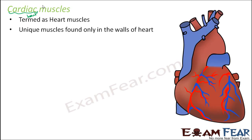The third type of muscle is cardiac muscle. The word cardiac itself means something related to the heart, so these are also termed as heart muscles. They are unique muscles found only in the walls of the heart. Initially people thought there were only two types of muscles — voluntary and involuntary — but later they found that the muscles on the walls of the heart are very unique: neither skeletal muscles nor smooth muscles. Because of their peculiar characteristics, they were grouped under a separate type called cardiac muscles.